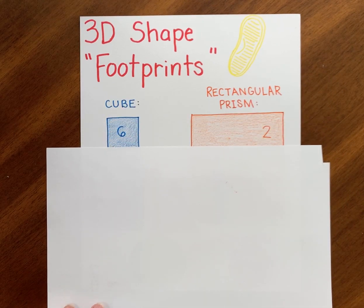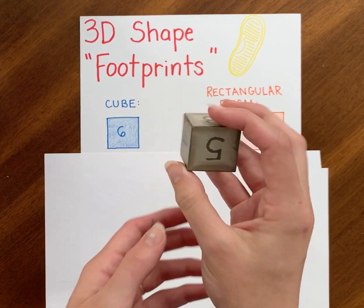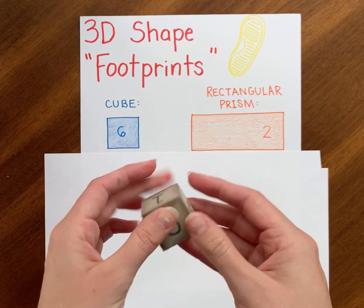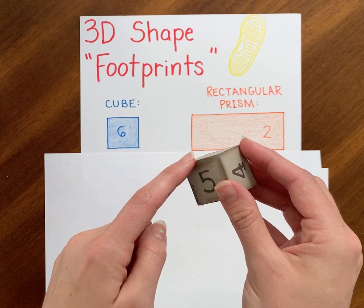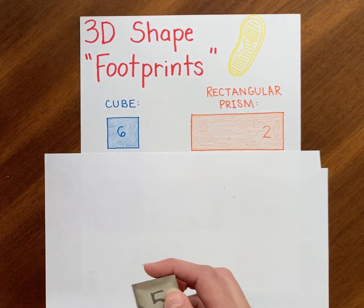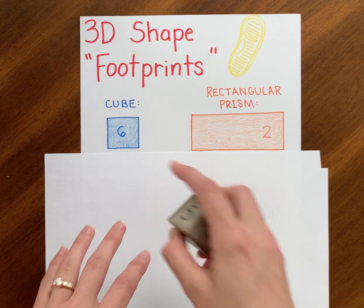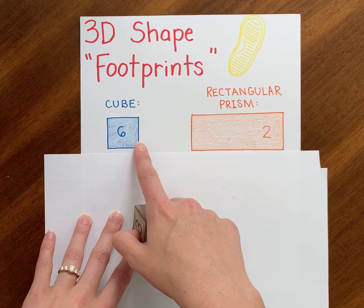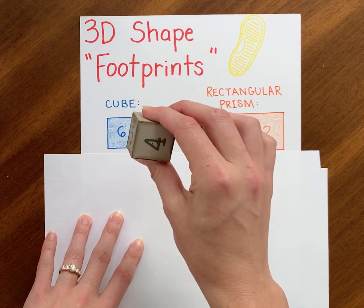The first one I want to look at is a cube. I have a cube here. It's a 3D object because I can touch it, I can hold it, and there's all of these different faces, vertices, and edges. A footprint is going to look just like a face, but a footprint is a way for us to put a face on a piece of paper. So now we have a 2D shape that goes with our 3D object.